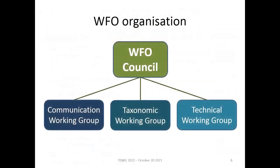The consortium is organized in three main entities: a world council that meets twice per year and decides on strategic matters, and three subgroups — the taxonomic working group, dealing with classification and taxonomy.